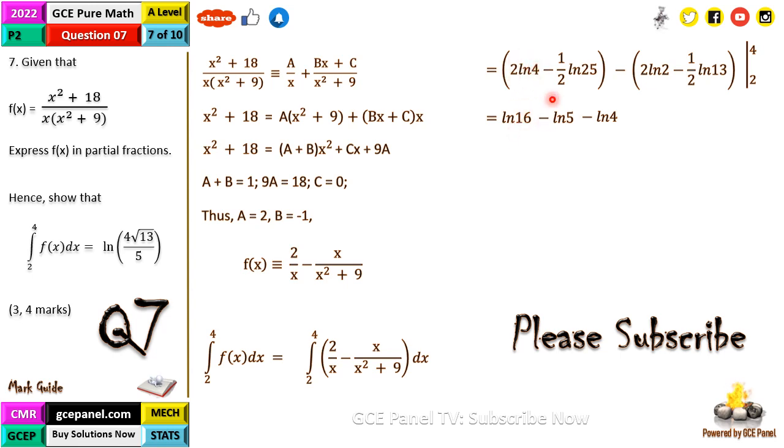A half ln 25 is the same as ln the square root of 25 which is ln 5, minus 2 ln 2 which is ln 4, then minus minus is plus, so this gives us a half ln 13 which is ln the square root of 13.